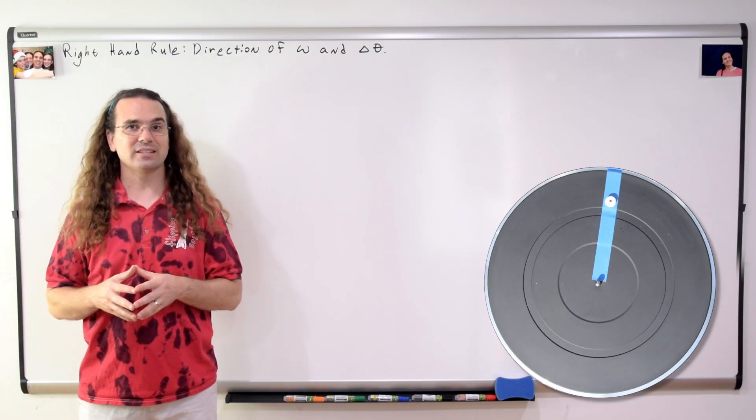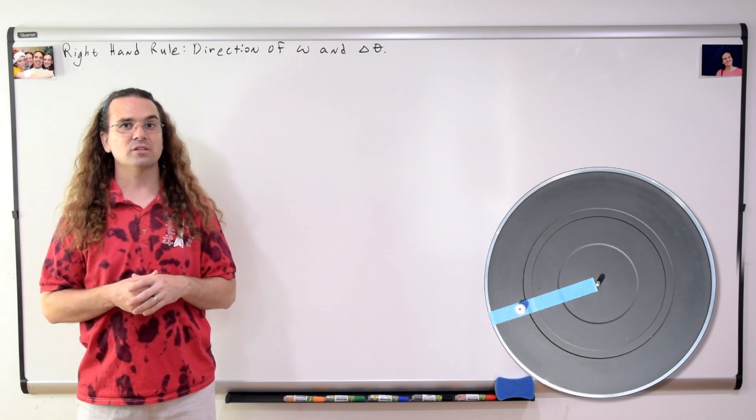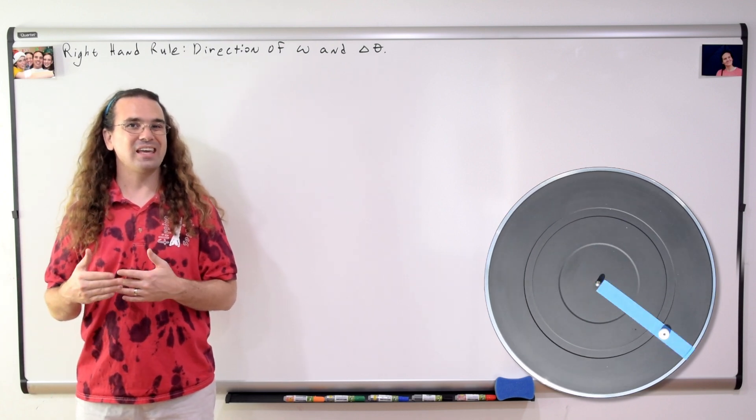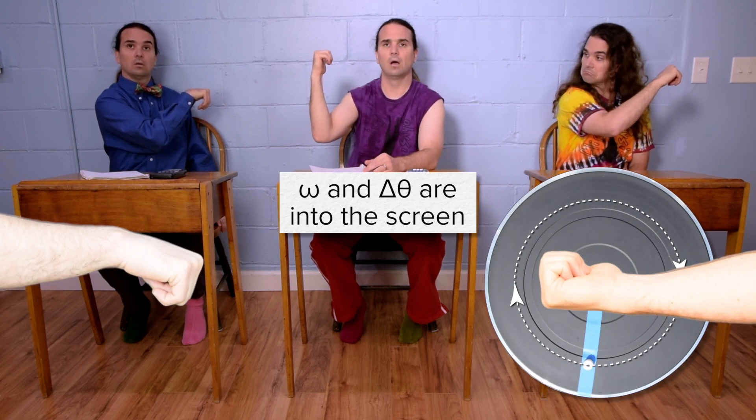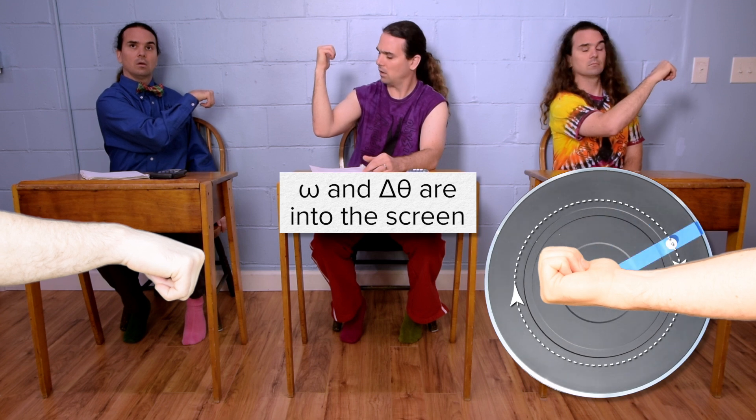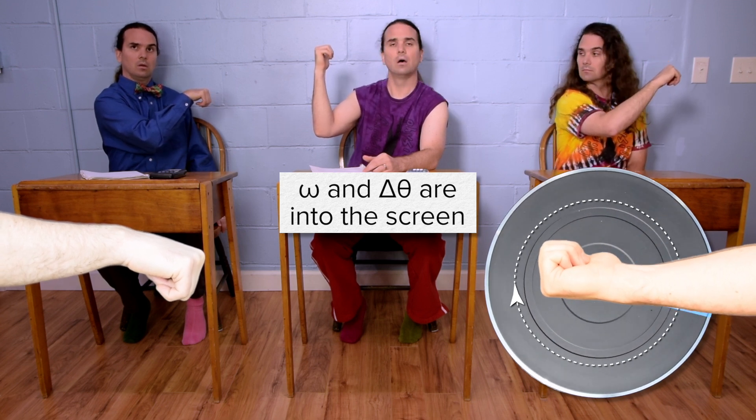Now let's do another example. Again, we have the mint revolving on the turntable, only the direction has changed. I have added arrows to the circle to indicate how the mint is moving. Please take your right hand, curl your fingers to make them follow the circle through which the mint is moving, and then stick out your thumb. Your thumb is pointing in the direction of the angular velocity and angular displacement of the mint and turntable. Notice everybody's thumb is pointed into the screen. In other words, this mint and turntable have an angular velocity and an angular displacement which are both directed into the screen.